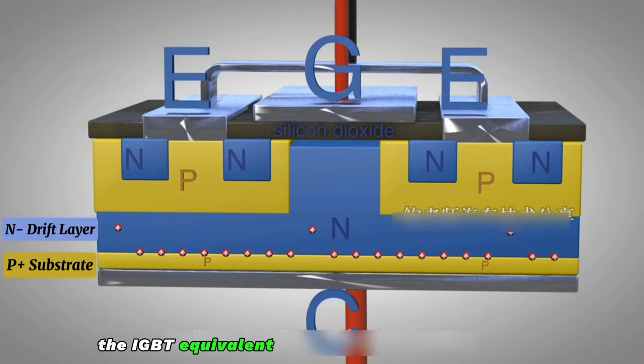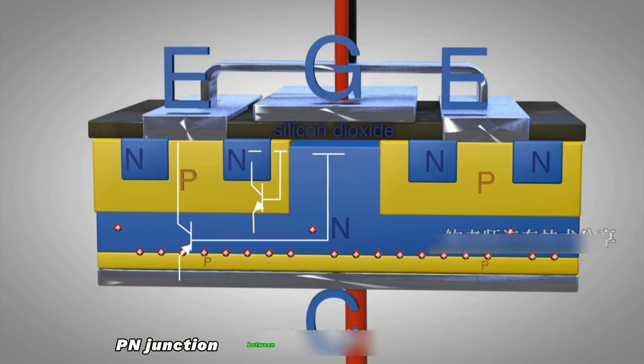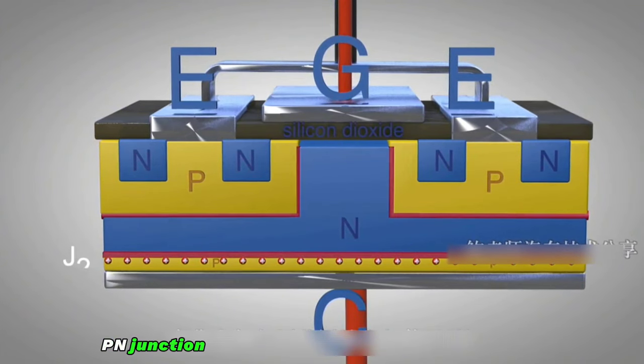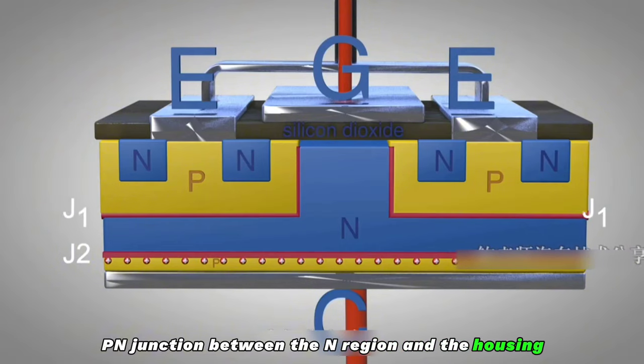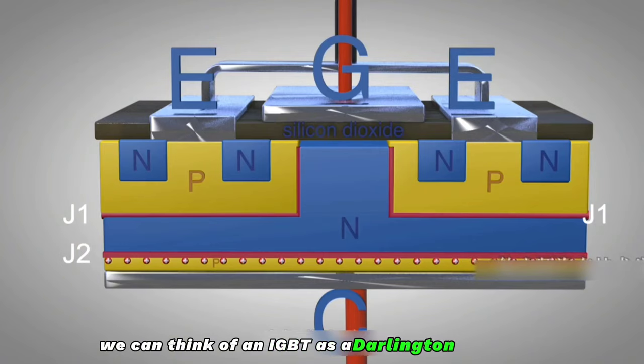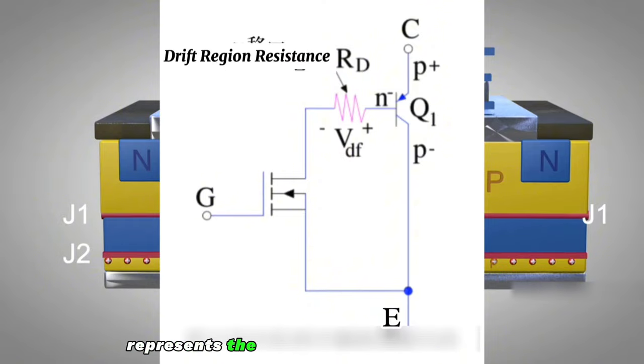The IGBT equivalent diagram is shown in the figure. This forms a PNP transistor on the outside of semiconductor region. The transistor PN junction between collector and drift region, we call it J2. PN junction between the N region and the housing, we call it J1. We can think of an IGBT as a Darlington transistor composed of an N-Channel MOSFET and PNP-type BJT. The resistance in the diagram represents the resistance of the drift region.